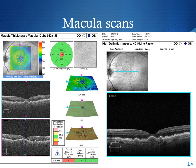When presented with macular scans on the Cirrus HD OCT, there are a few options. You can use the macular cube 200x200, the macular cube 512x128, or the high-definition 5-line raster scans. The macular cube 512x128 gives you 512 scans in the horizontal direction by 128 scans in the vertical direction. The macular cube 200x200 gives you 200 scans in the horizontal by 200 scans in the vertical.